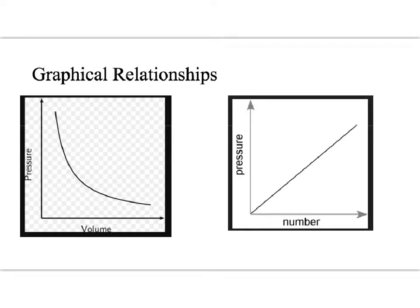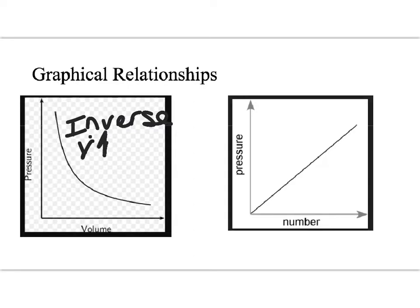In the PVTN lab, you looked at three relationships. You looked at the relationship between volume and pressure, the number of particles and pressure, and temperature and pressure. What you should have seen with volume and pressure is what's known as an inverse relationship. As the volume increases, your pressure is going to decrease, because you have more space, which allows for less collisions, and therefore less pressure.